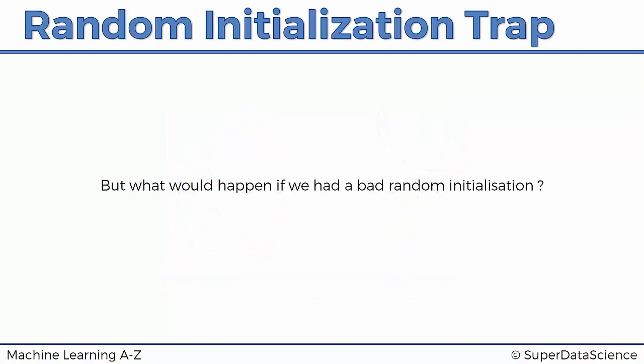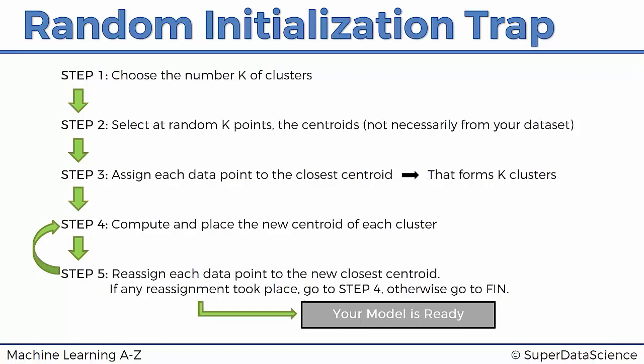So what will happen if we had a bad random initialization? Bad is a term we're going to use loosely for now, but you will see why we're using bad random initialization just now. Again, we're going to go through these steps that we discussed in the previous tutorial. We're going to choose the number of clusters, which is three.